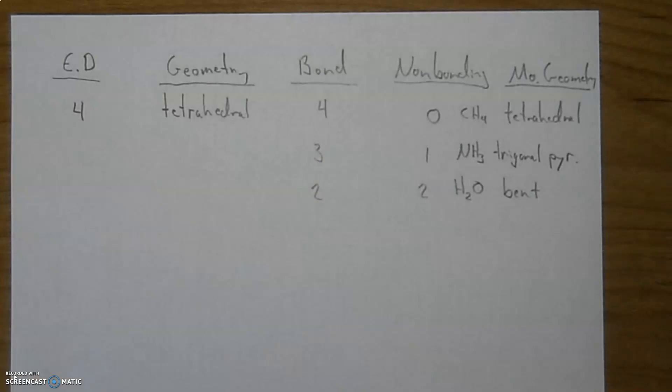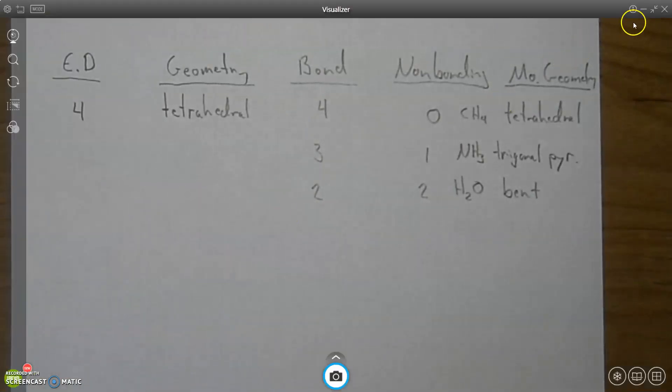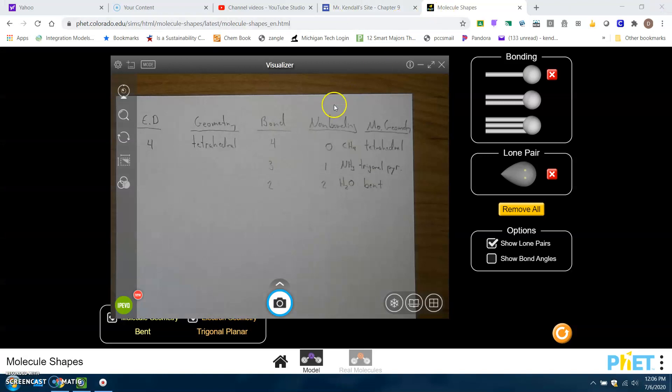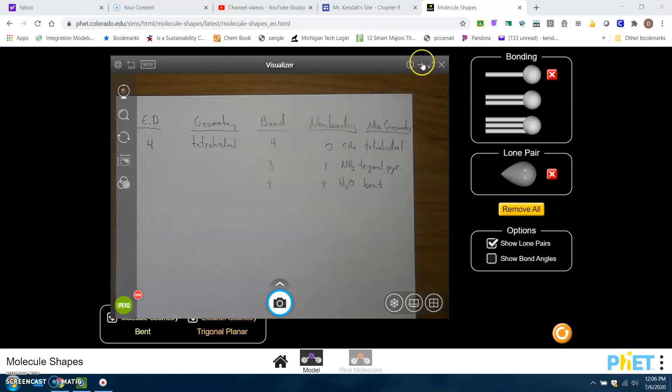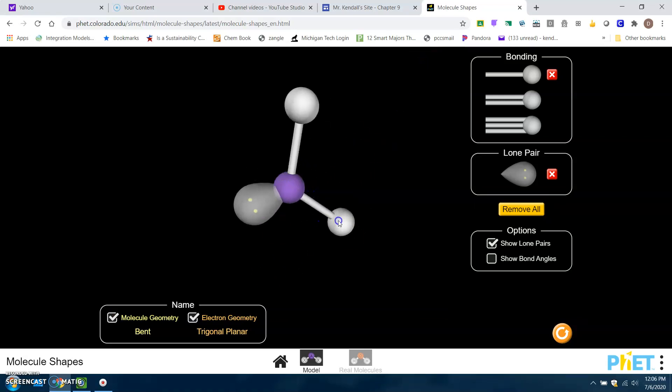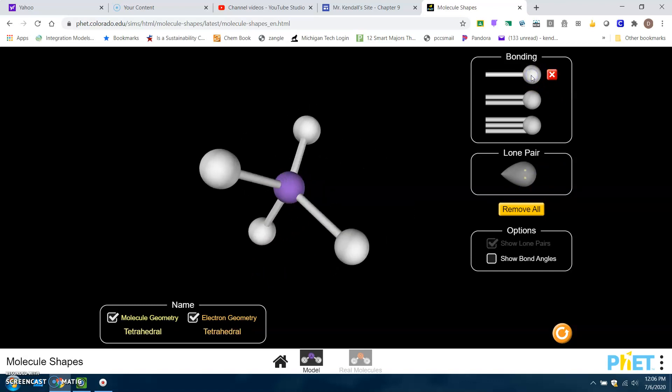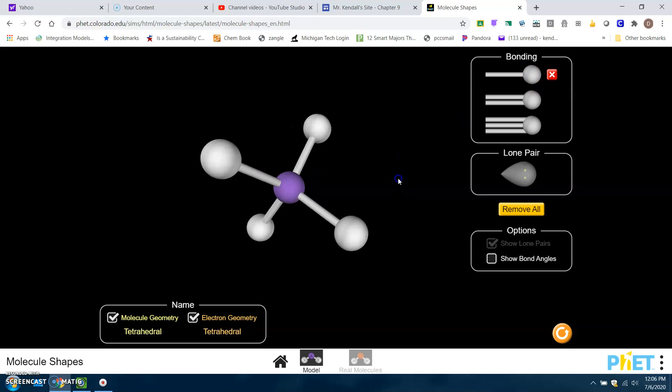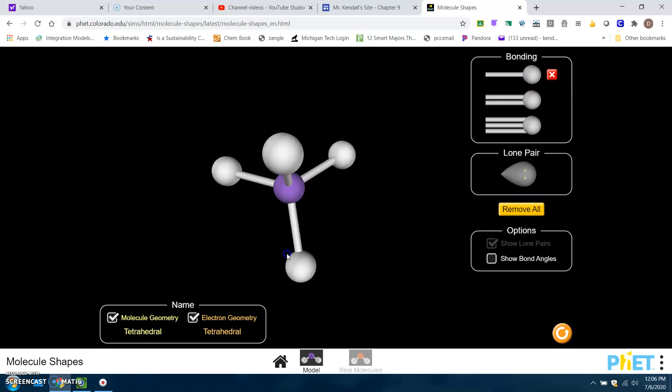Let's bounce over to the PhET site and we'll take a look. There it is. I guess I have to minimize this. Okay, so this is where we were last time. So we need four bonded pairs. I'm going to get rid of this. And one, two. There it is. So we have four bonded pairs. Notice the shaping here.